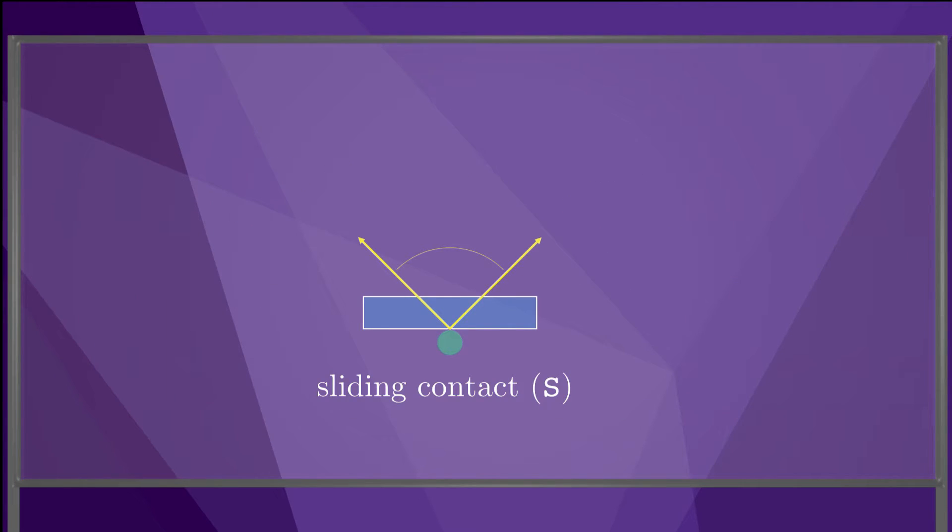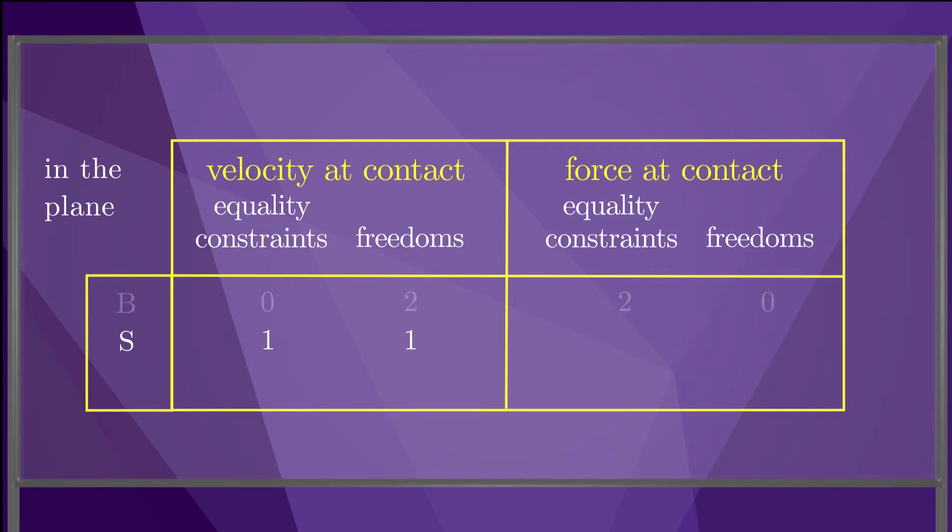If the contact is sliding, then the contact force is constrained to be somewhere on the edge of the friction cone resisting sliding. Referring again to the table, there is one constraint on the velocity, that the normal velocity at the contact is zero, and one freedom to choose the magnitude of the sliding velocity.